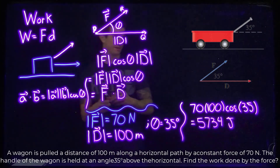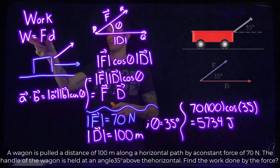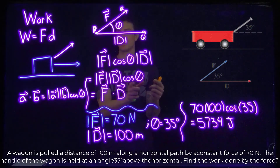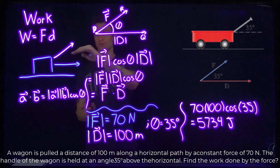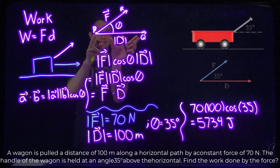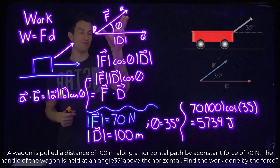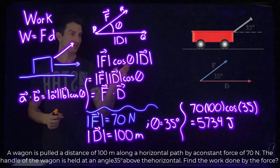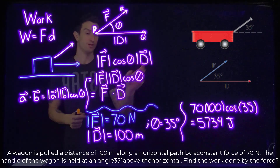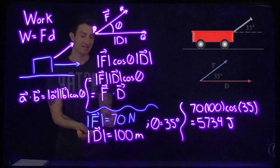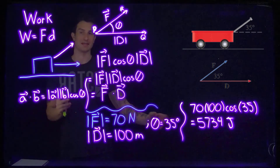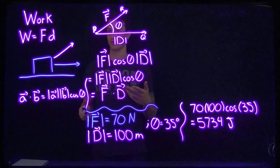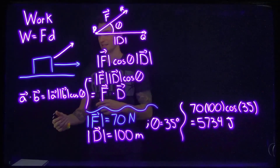So again, we started with our basic equation of work. Now we're introducing the idea that maybe we're not pulling the force in the same direction as the object is moving — there's a slight angle. We have our force vector and displacement vector. We calculate the force component in the direction of displacement (magnitude of F times cosine theta), then multiply by the magnitude of displacement. Putting it all together with magnitudes and an angle, we can calculate work. If you have questions, come to class or leave comments below.